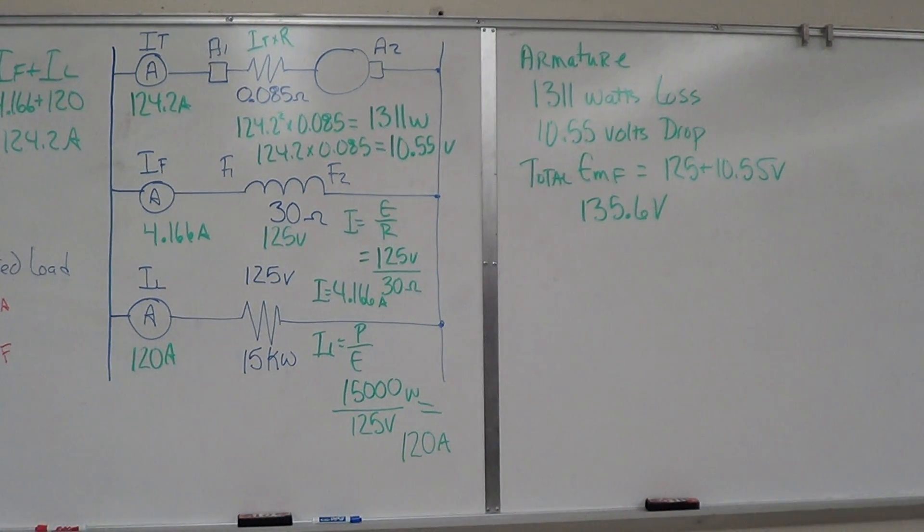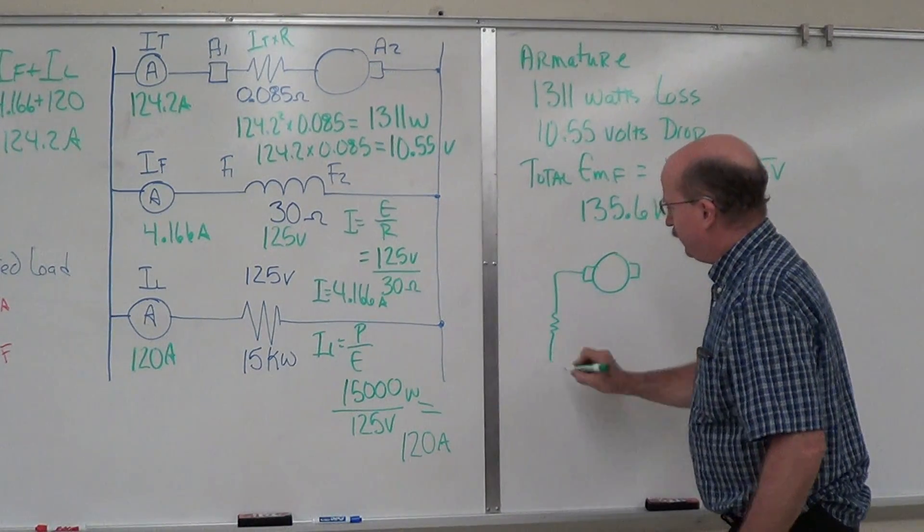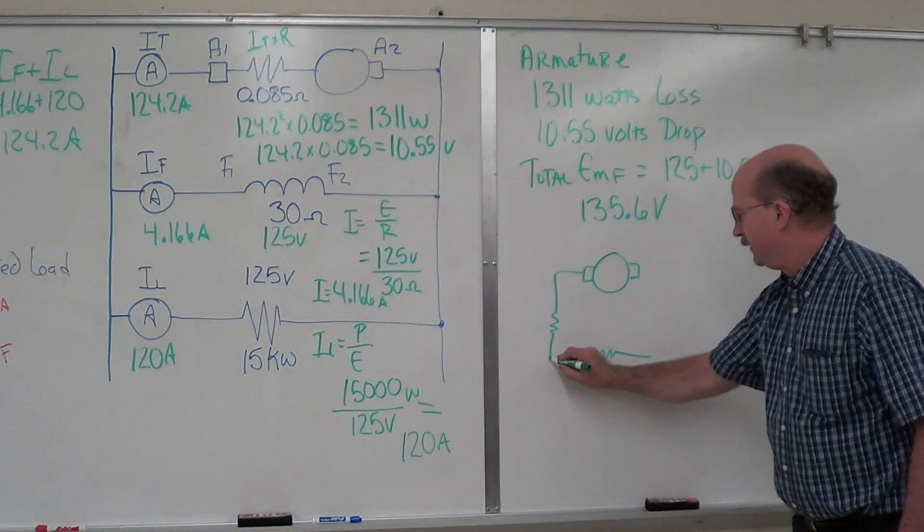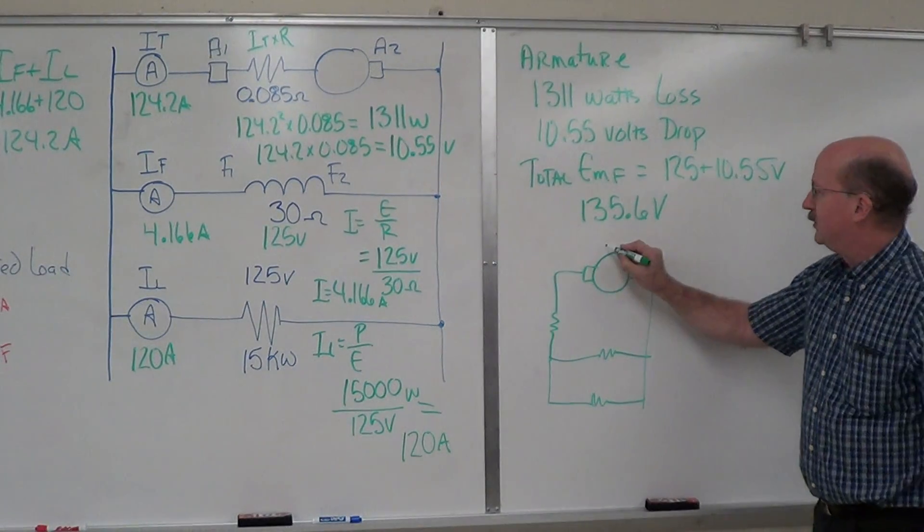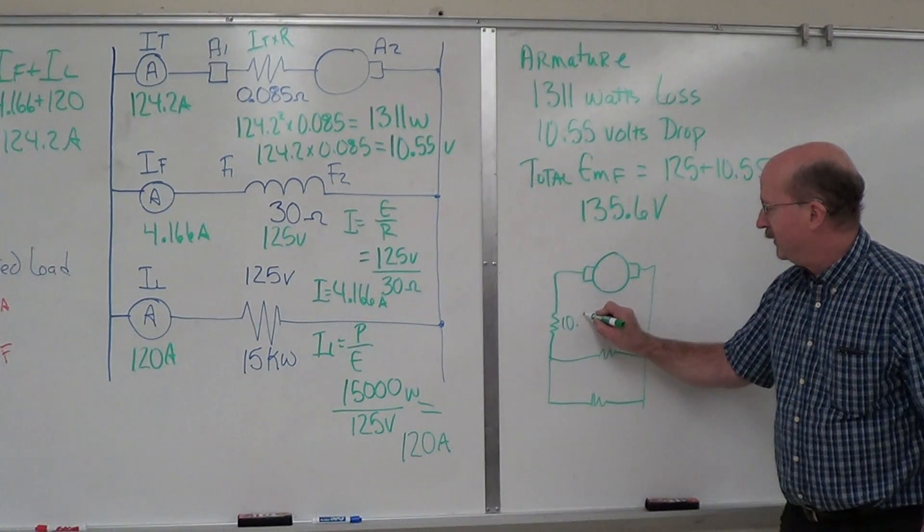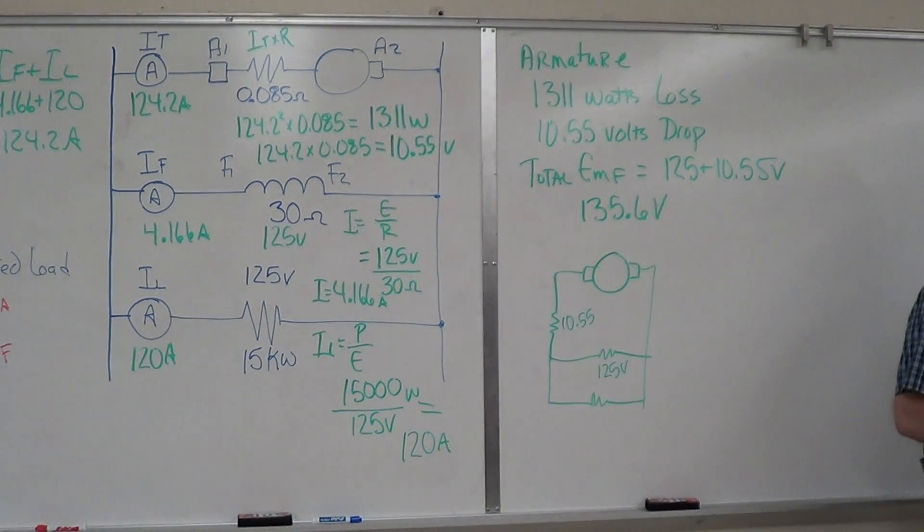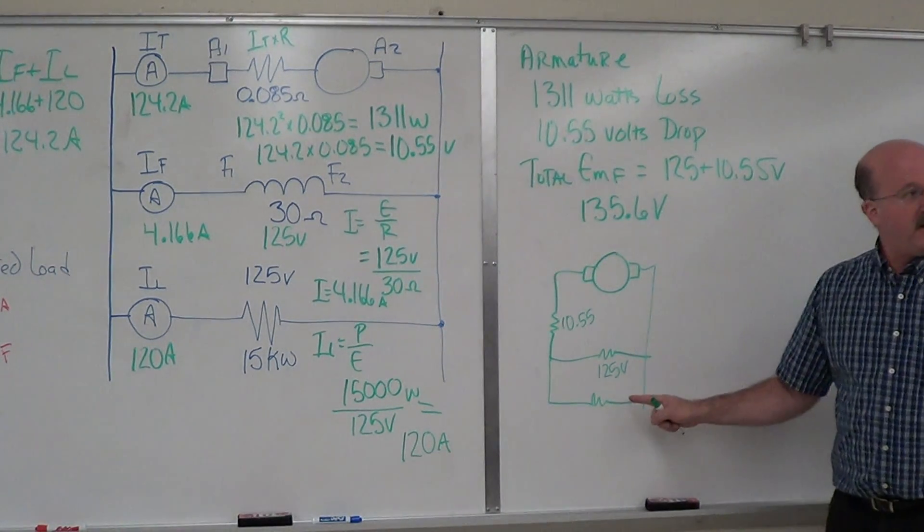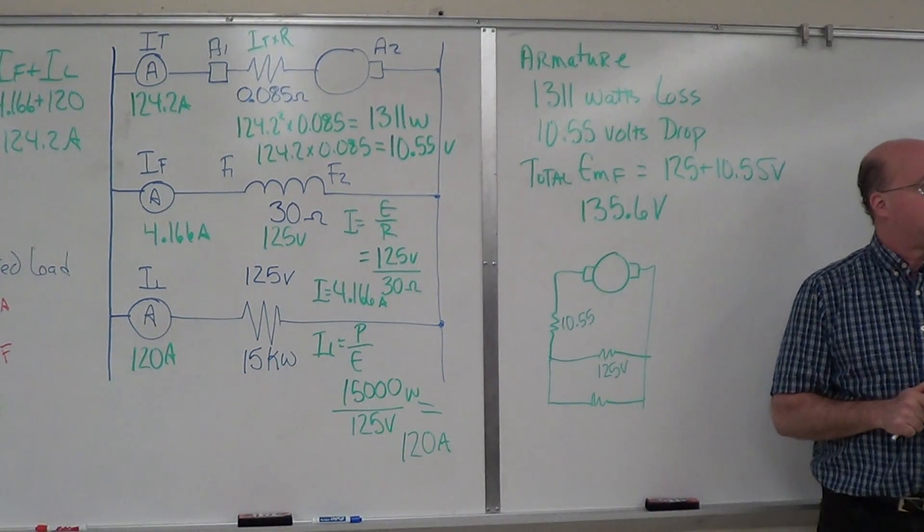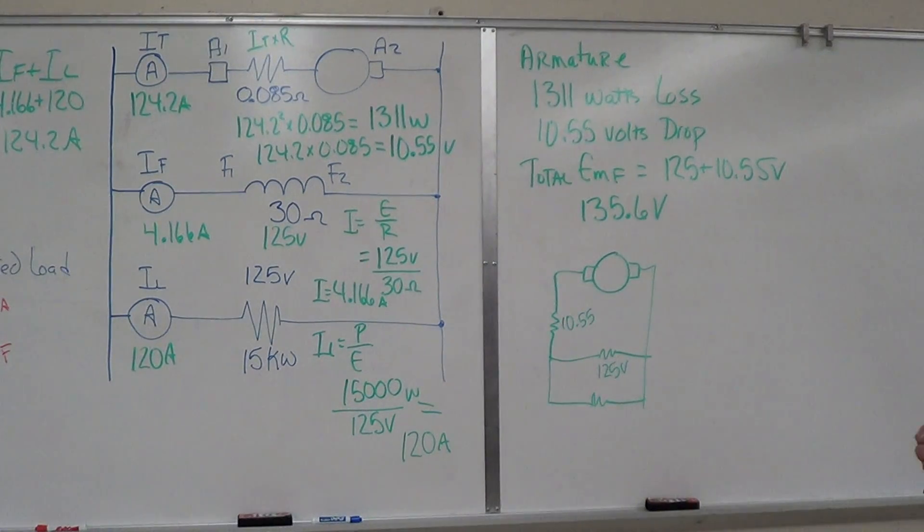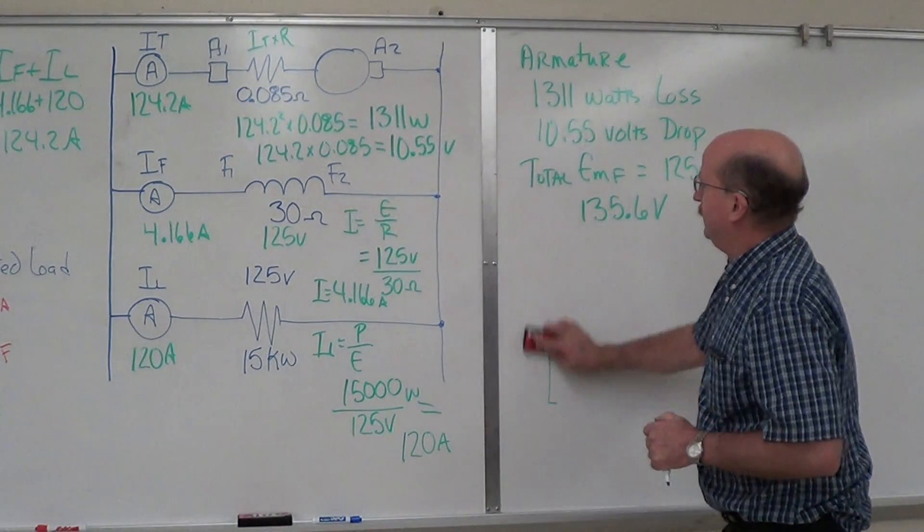Why did you add the 125 plus the 10.55? If we look at this, here's your generator with your internal resistance. Here's your shunt field and your regular load. It's a combination circuit. All the voltage is being generated here, which is 135.6. You've got 10.55 being dropped inside of it, and you have 125 at the load and at the shunt field. These two are in parallel, so they're the same voltage. That's in series with this resistance. We add them up for a total of 135.6.